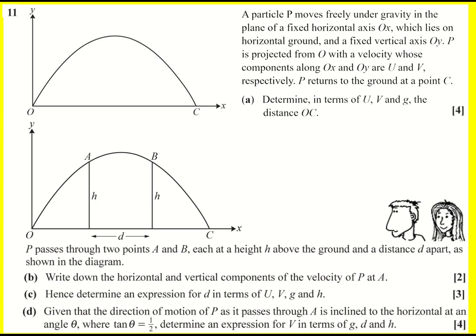We have a projectile motion question. Particle P moving under gravity following this curve as shown, which is a quadratic. We're told that the velocity initially, instead of being given the speed and the direction, we're told it's actually going to be U horizontally and V vertically.